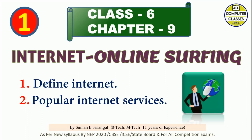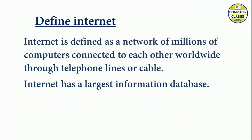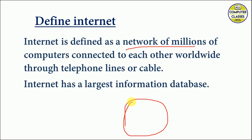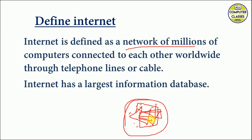Let's begin the chapter. What is the definition of internet? Internet is a network of millions of computers connected to each other. For example, imagine a globe — there are millions of computers in all the continents, in all the countries, and all these computers are connected when you are on the internet. So internet is defined as a network of millions of computers connected to each other worldwide.